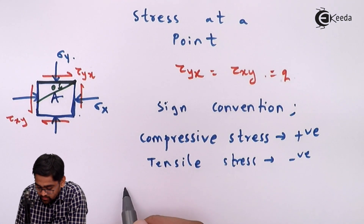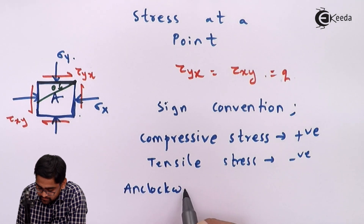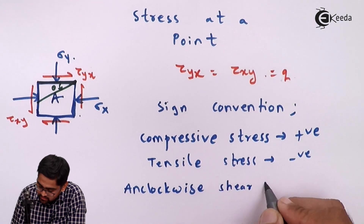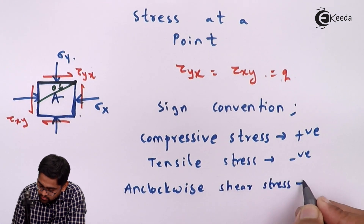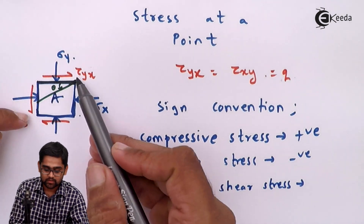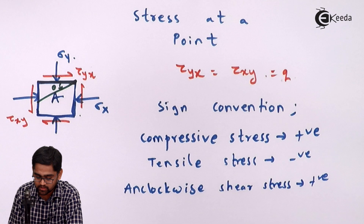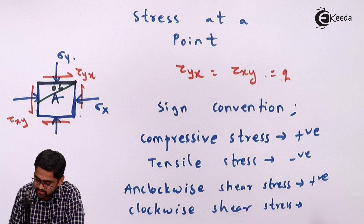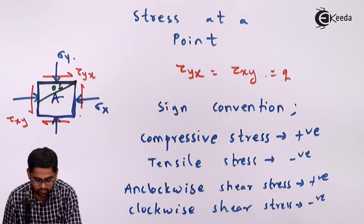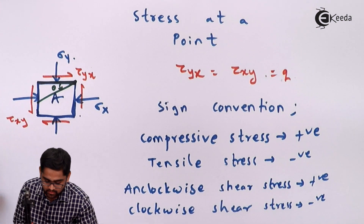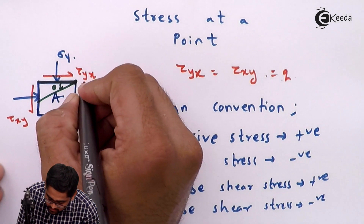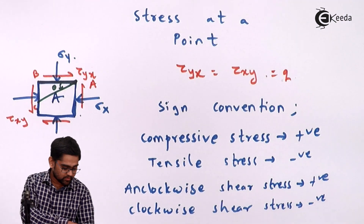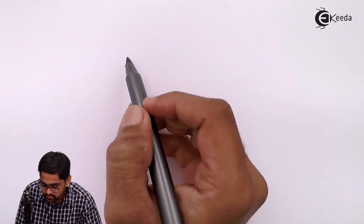Anti-clockwise shear stress is taken as positive, and clockwise shear stress is taken as negative. With these sign conventions established, we consider the equilibrium of part ABC in the next diagram.